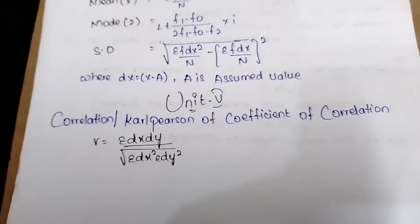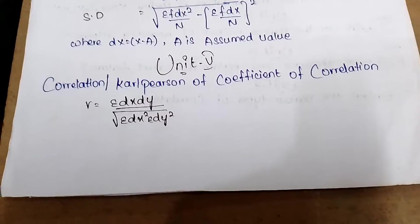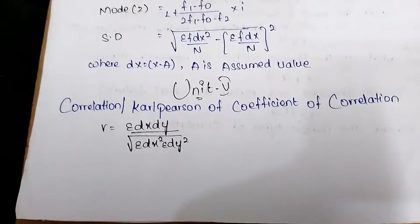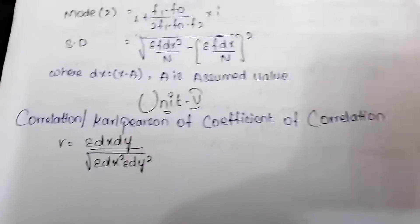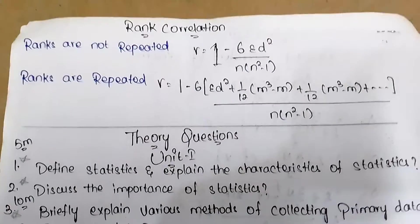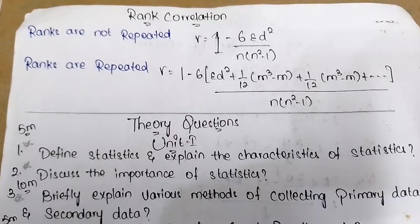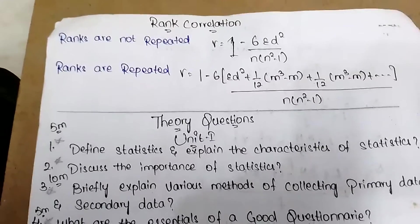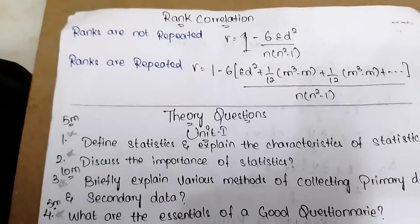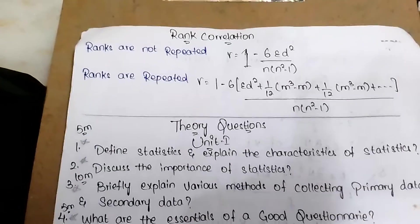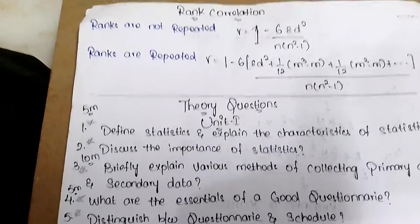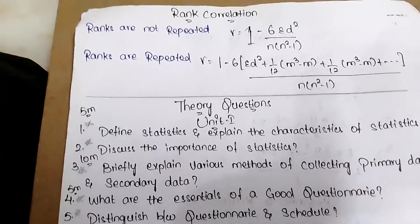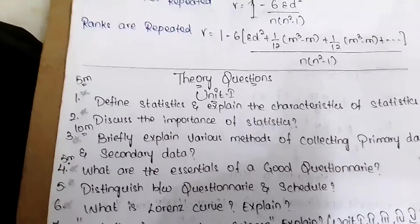Spearman's rank correlation: when ranks are not repeated, r = 1 − 6Σd² / (n(n² − 1)). When ranks are repeated, r = 1 − 6[Σd² + (1/2)(m³ − m) + (1/2)(m³ − m) + ...] / (n(n² − 1)). These are important theory questions for public examinations and all universities.